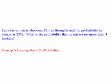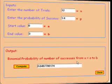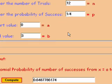I'm going to use EduScape's binomial calculator to solve the following problem. Basically what we do is enter the number of trials, in this case it would be 12, the probability of success, which would be 1 fourth, and the start and end value, which would calculate the probability that's listed in the problem.